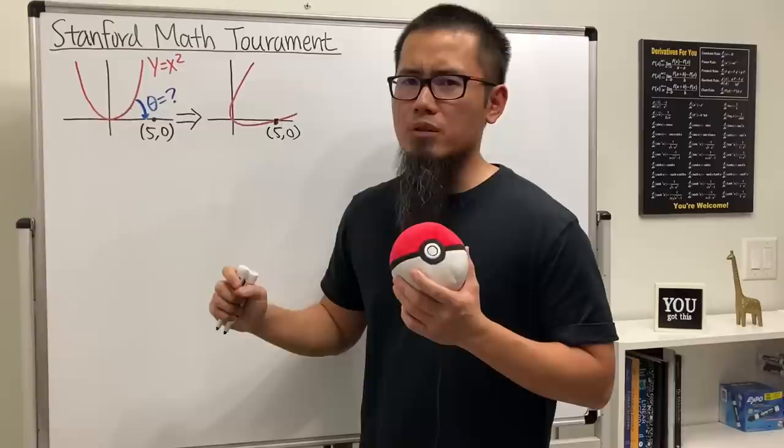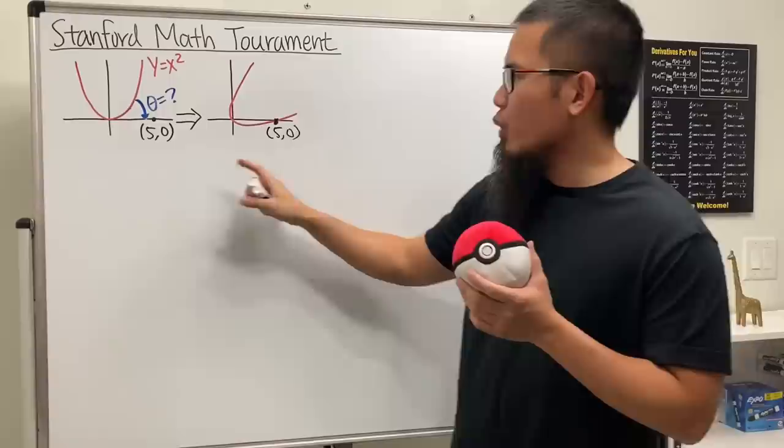As we all know, the curve y equals x squared does not pass through the point (5, 0). But is it possible for us to rotate it so that it does pass through (5, 0)?